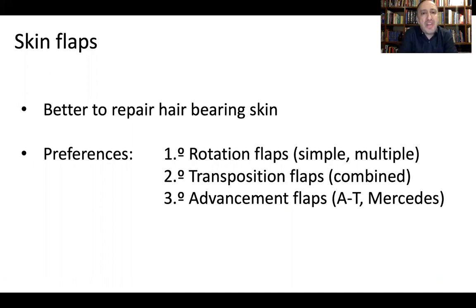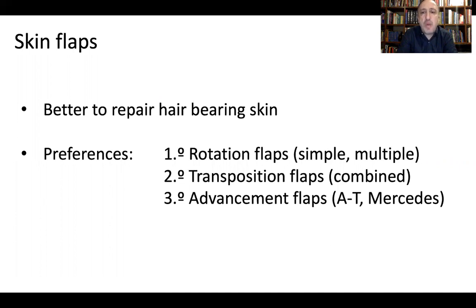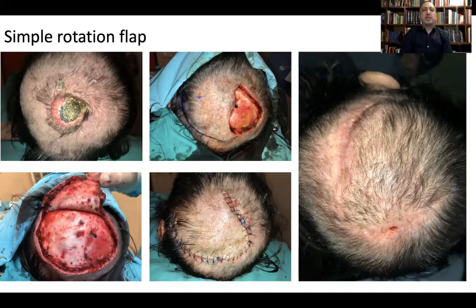When planning flap reconstruction on the scalp, I think of rotation flaps first. Rotation flaps — simple or multiple — generally achieve a better movement and recruitment of tissue for good reconstruction. Some transposition flaps, particularly when multiple and combined, are also good for large scalp defects, as are certain advancement flaps such as the A-to-T flap and the Mercedes flap, which I will show in later slides. For rotation flaps, a simple rotation flap was able to move a good amount of skin to close this medium-sized defect.